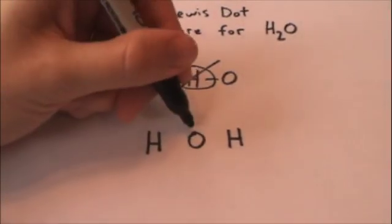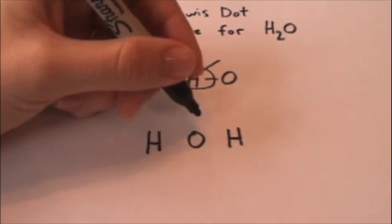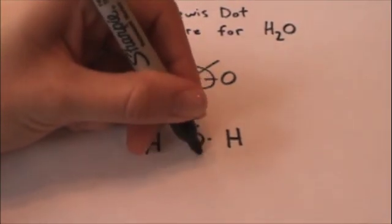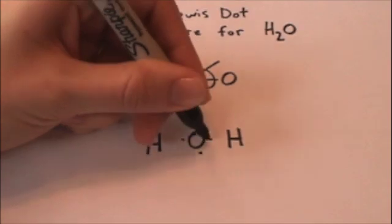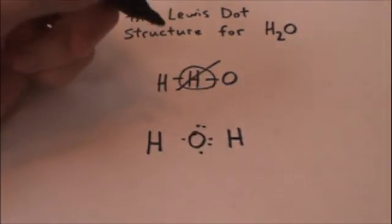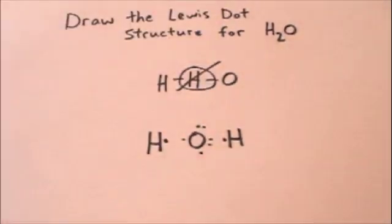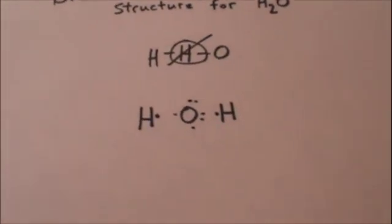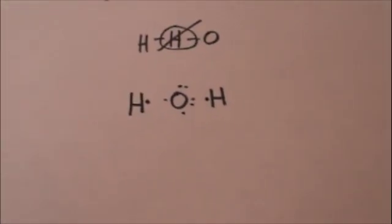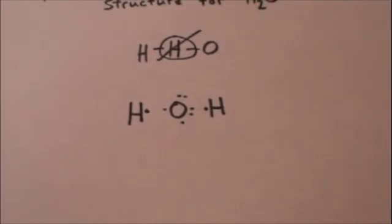Oxygen has six valence electrons because it's in group 6A, so one, two, three, four, five, six. Hydrogen has one valence electron. How are these atoms going to combine together so that each one is stable?